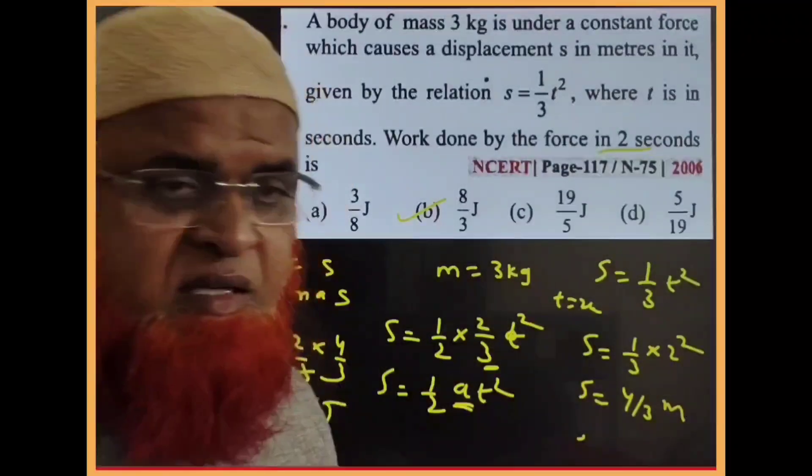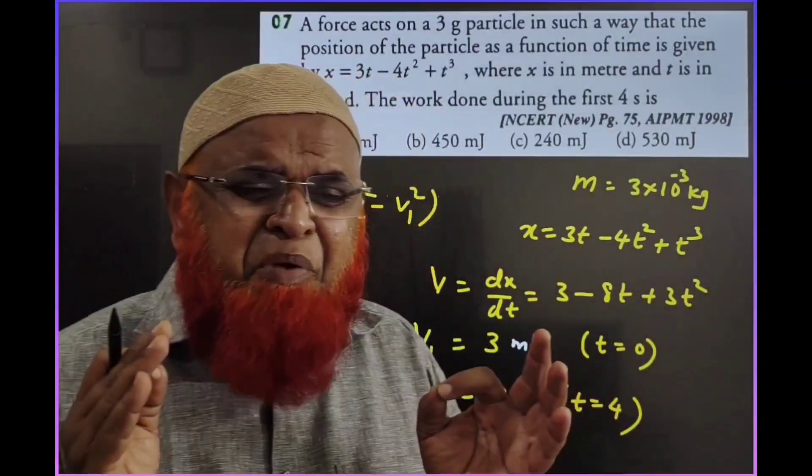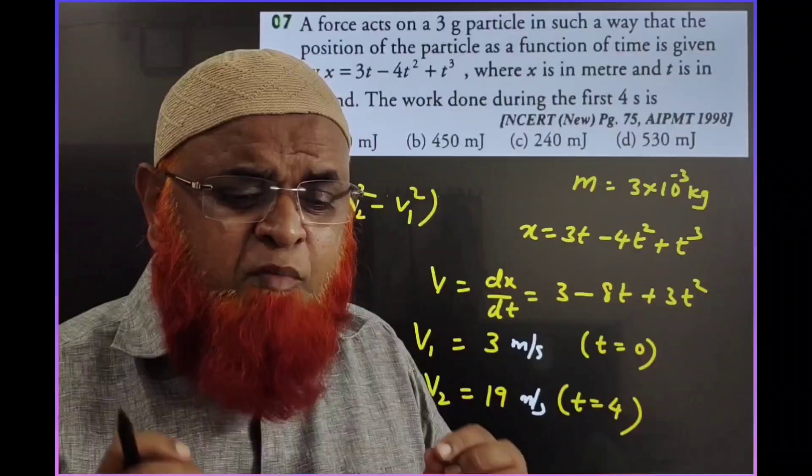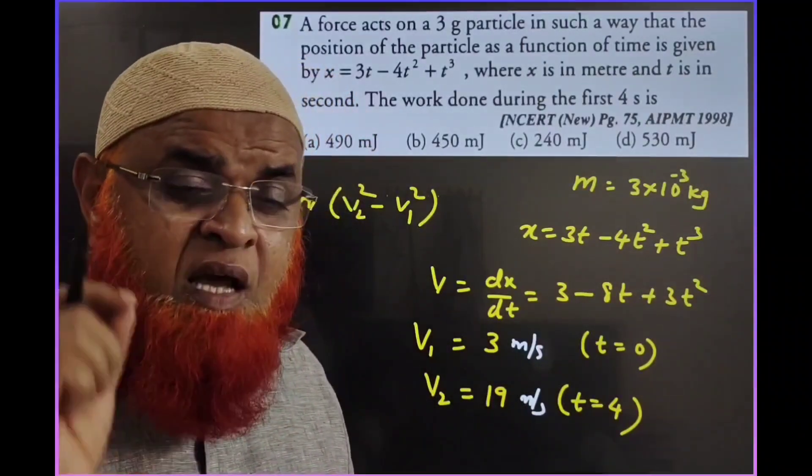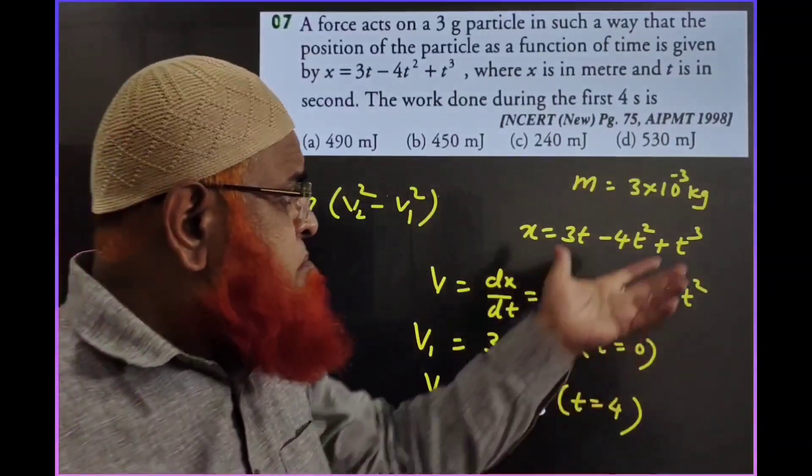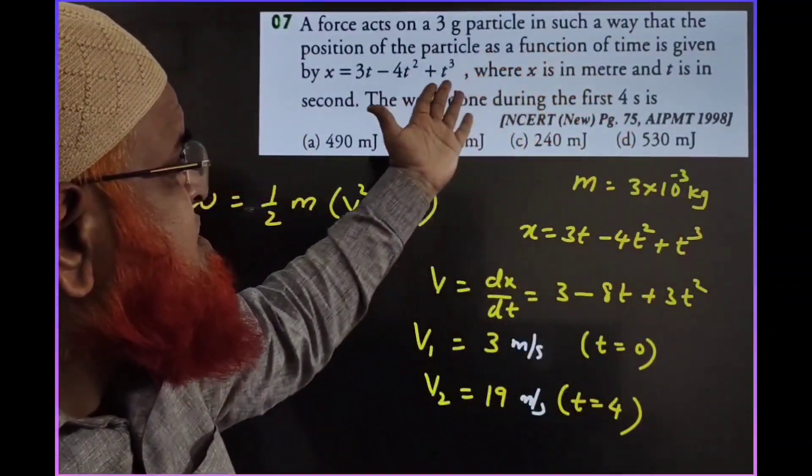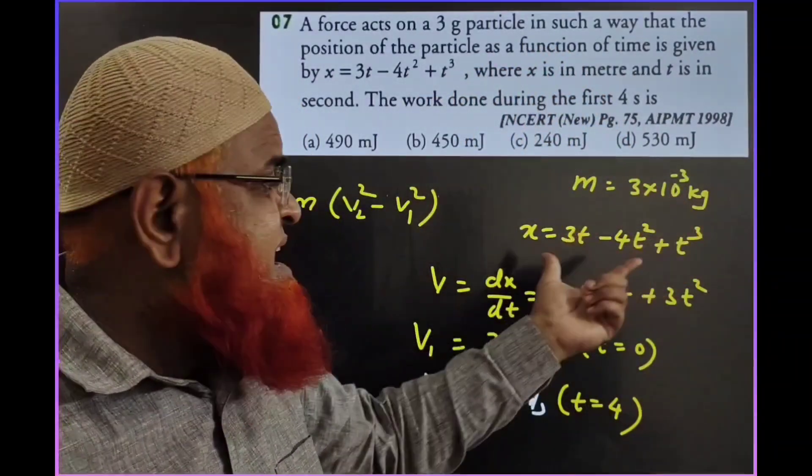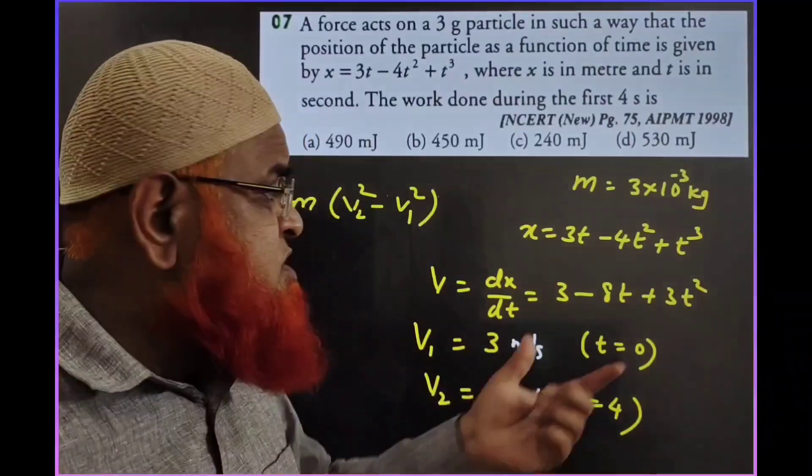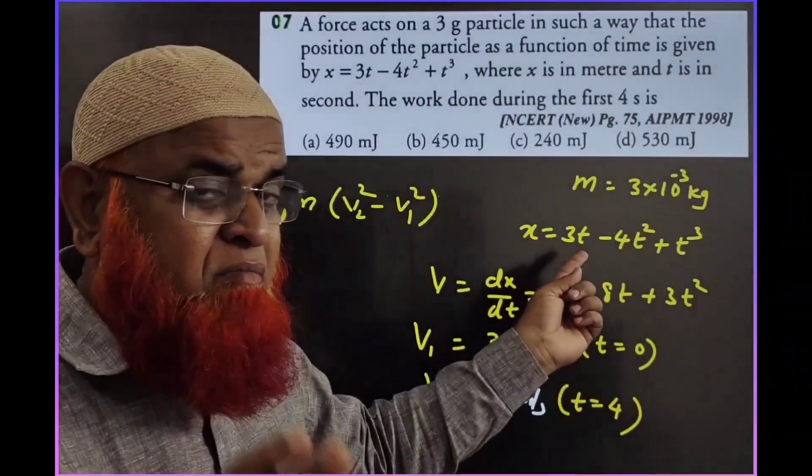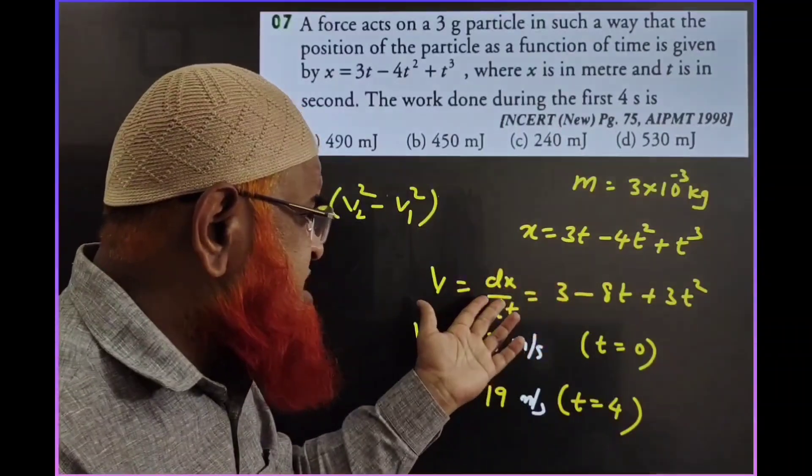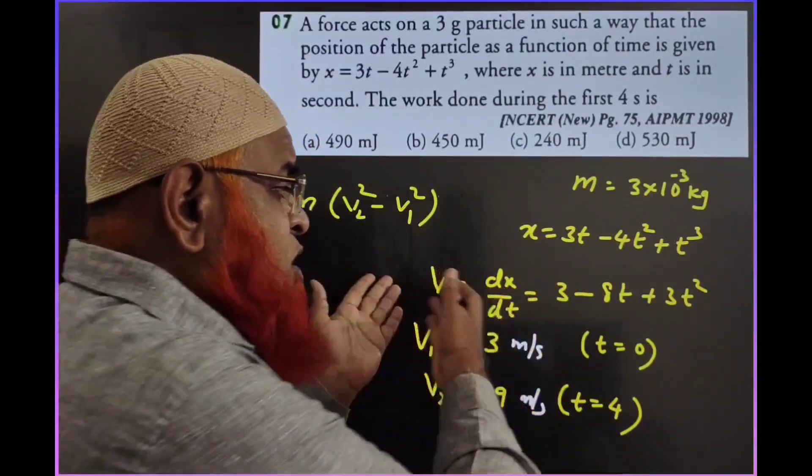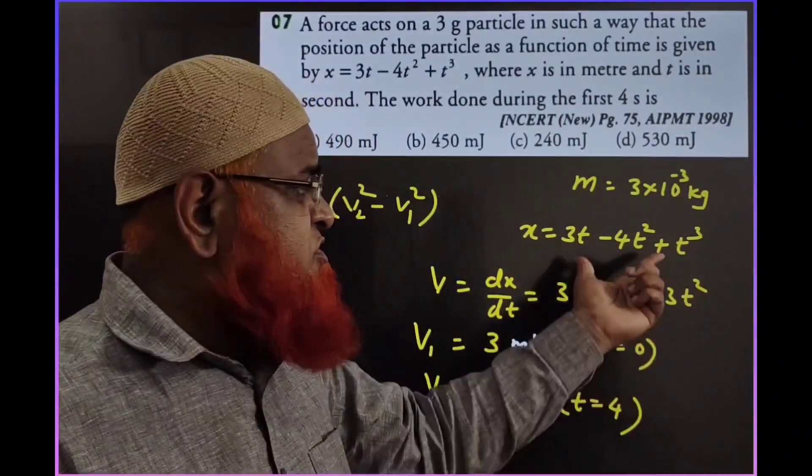This is a previous year NEET question I'll solve in a super simple way without complex integrations and differentiations. Mass is given in grams, which I'm converting to kg. Displacement is given as an equation. I'm doing one simple thing: differentiating displacement with respect to time to get velocity.